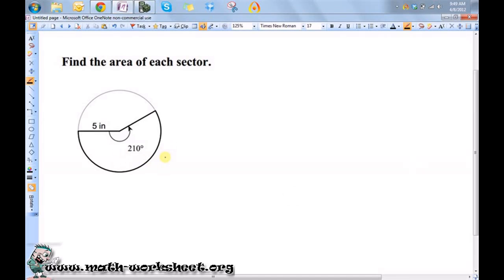If you want to find the area of a sector and your angle measure is in degrees, then you use the formula A equals theta over 360 times pi r squared. This is the degrees version.